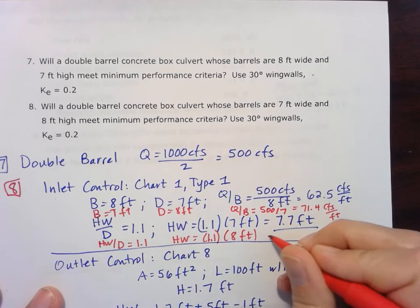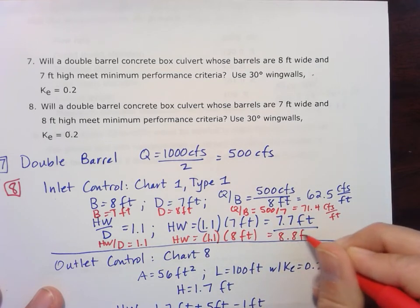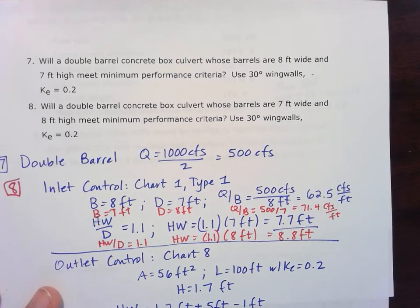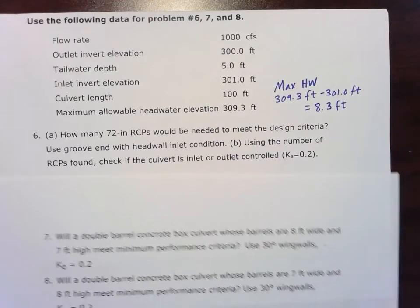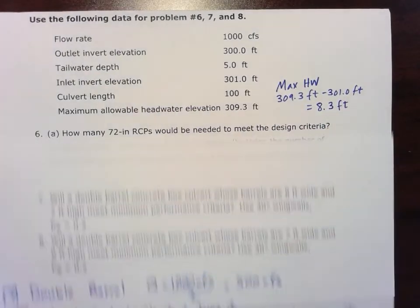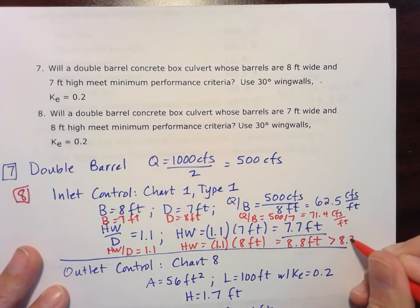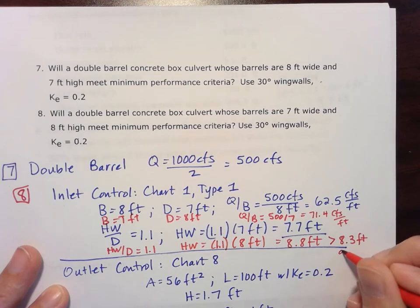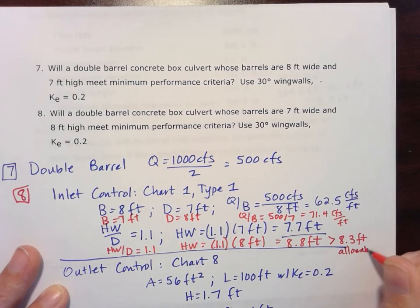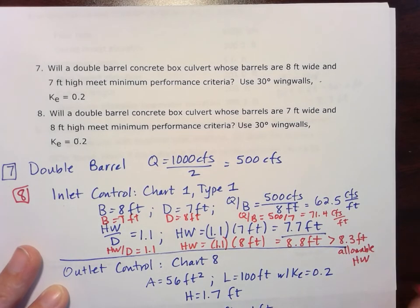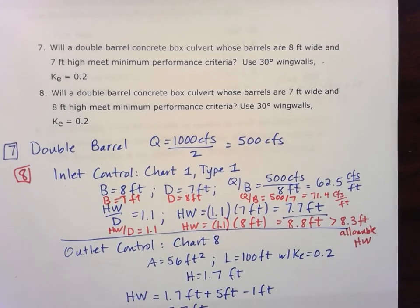And so now my HW becomes 8.8 feet, which is bigger than that allowable headwater of 8.3 feet. So 8.8 feet is greater than that 8.3 feet allowable headwater. So we're just going to stop there. That design's not going to work.